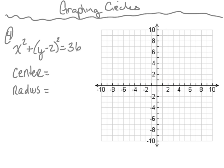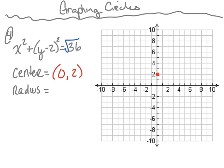Number 4: we have the equation x squared plus y minus 2 squared is equal to 36. The first thing we're going to do is locate the center, which is going to be at the ordered pair 0, positive 2, right here. Now we need to find the radius by taking the square root of 36, which is 6. From the center we're going to move 6 to the right, 6 to the left, 6 up, and 6 down. Once we have these four points, we connect them making our circle. This is the circle for x squared plus y minus 2 squared equals 36.